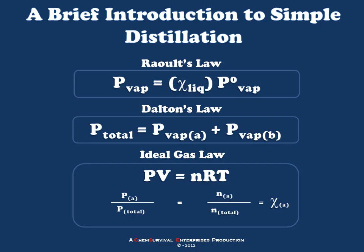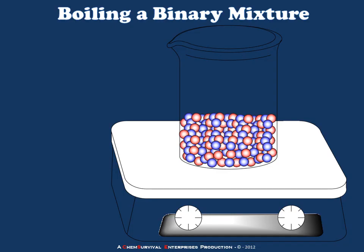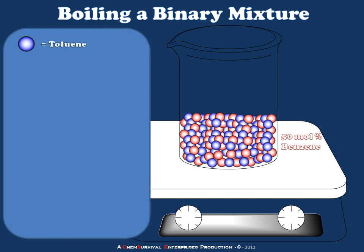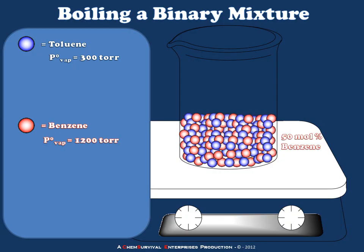Now let's take a look at how we can use these three observations to predict how a distillation will behave. Shown here is a beaker filled with a liquid — a binary mixture of two different compounds. The blue spheres represent molecules of toluene, and the red spheres represent molecules of benzene, so this depicts a mixture of about 50 mole percent benzene and toluene. From data tables, at the boiling point of this mixture, the vapor pressure of pure toluene is 300 torr. Applying Raoult's Law, the partial pressure exerted by toluene is 150 torr, because its mole fraction is 0.5.